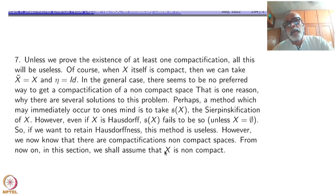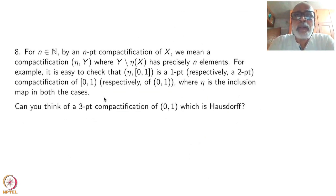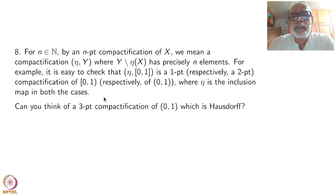However, we now know that there are compactifications of non-compact spaces — namely, you can take SX if you are ready to go out of Hausdorffness. At least we are not working in a void; there are compactifications. From now onwards, in this section, we assume that X is non-compact. There is no point in discussing compactifications of a compact space. For each n belonging to the natural numbers, by an n-point compactification of X, we mean a compactification (η, Y) where Y minus η(X) has precisely n points — meaning we have added exactly n points to the original space X.